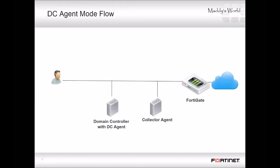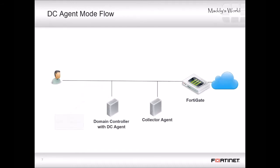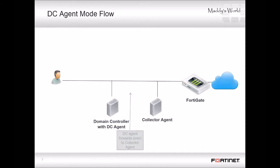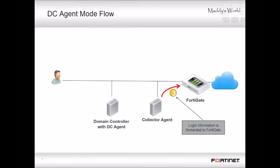Here we show what happens between DC agents, the collector agent, and a FortiGate device configured for FSSO authentication. When a user authenticates with the DC, he or she provides their Active Directory account credentials. The DC agent notices the login event and forwards it to the collector agent. If there are multiple DCs, they might all be forwarding to one collector agent. The collector agent aggregates all login events, then forwards that information to FortiGate, including the username, hostname, IP address, and user groups. FortiGate now knows who the user is at that IP address and which Active Directory group permissions apply.